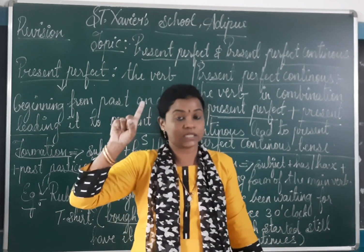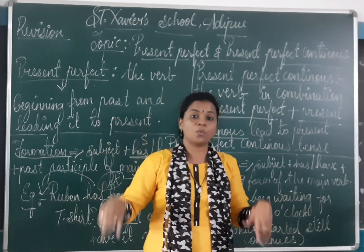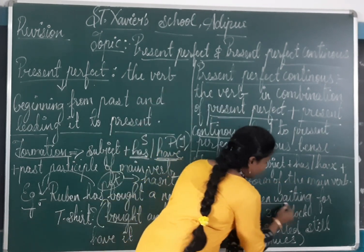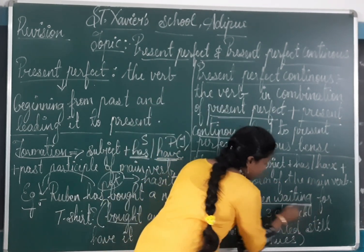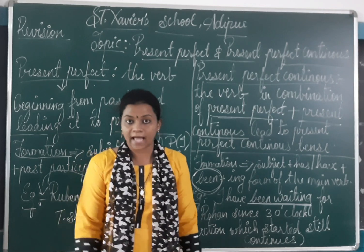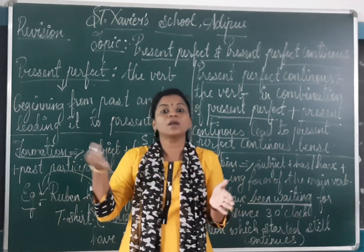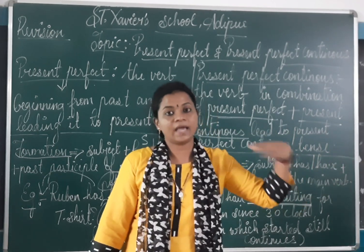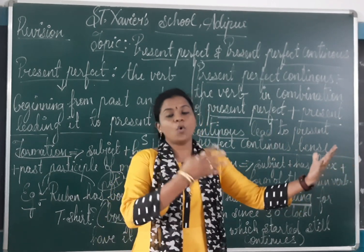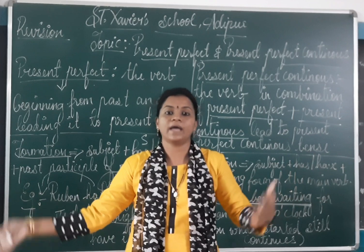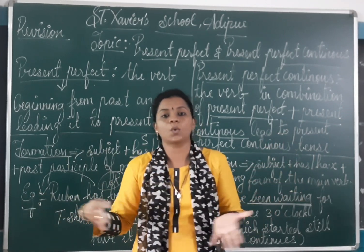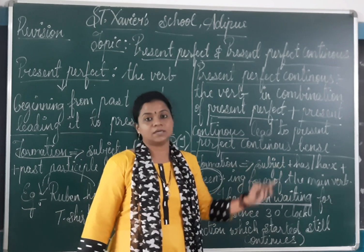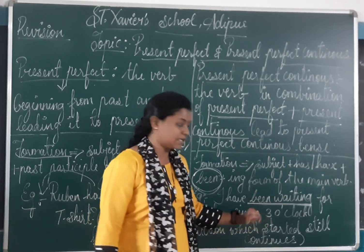For example: I have been waiting since 3 o'clock. The action started since 3 o'clock and the two words 'been waiting' show us that the action is still going on. The waiting started at 3 o'clock and it is still continuing now. So that is the meaning of present perfect continuous tense.